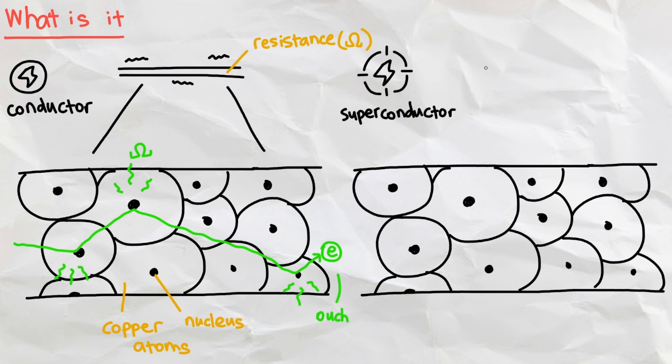But in the case of superconductors, an electric current has no resistance, so no energy is lost. If we send a current through a superconductor and disconnect the power source, this current will circulate there forever. So then, how do we make a superconductor?